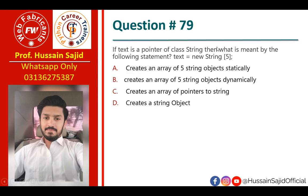If `text` is a pointer of class `string`, then the statement `text = new string[5]` means we are creating an array of five string objects dynamically.